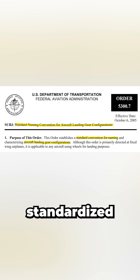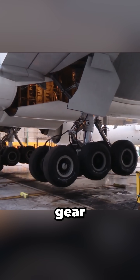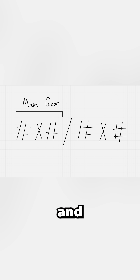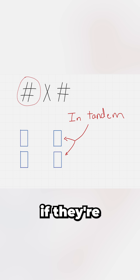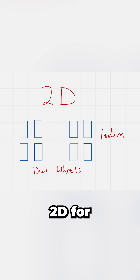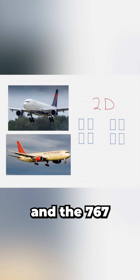That's why the FAA made a standardized naming convention for most landing gear configurations. I'm an aerospace engineer, and the first part of the code defines the main gear: S for single, D for dual, T for triple, and Q for quadruple. If they're arranged in tandem, a number goes in front, like 2D for two dual wheels in tandem. This arrangement can be found on the A330 and the 767.